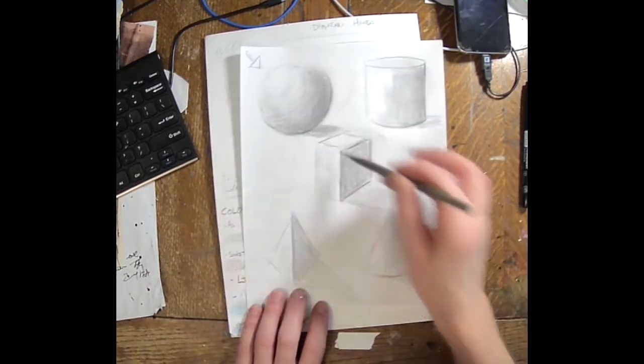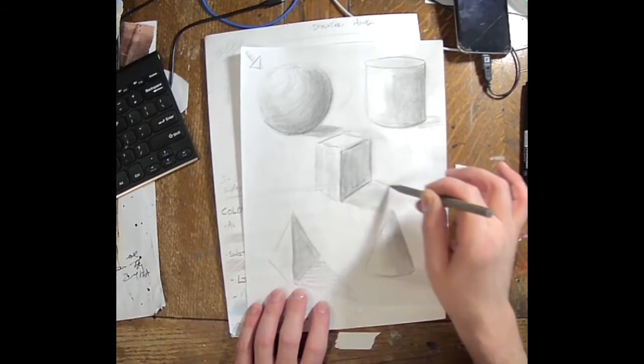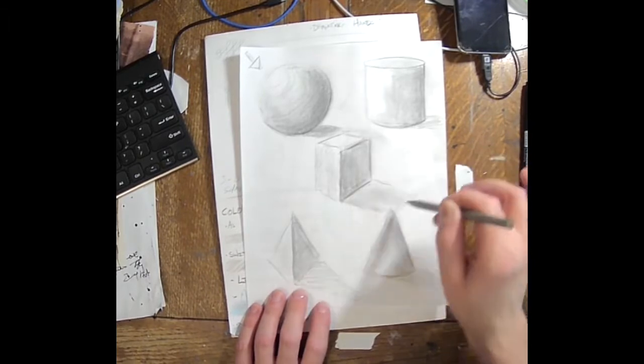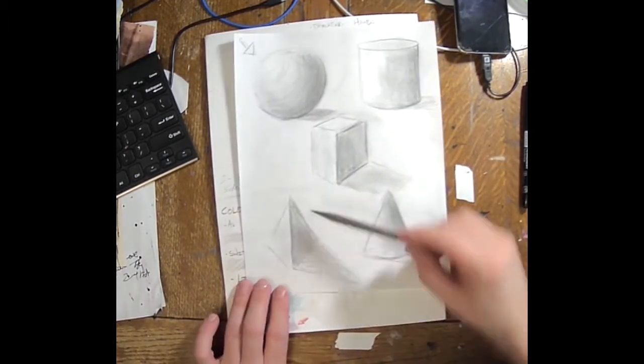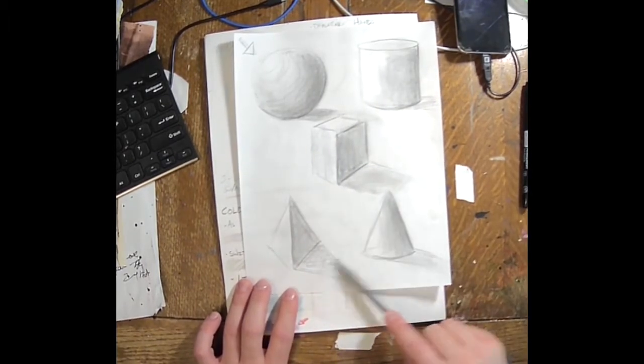But the basic idea is that it's going to come off the edges of your object. So off the cylinder, off the cube from the corners, off the cone, and then off the pyramid. The general idea is you go to those outer edges and you cast your shadow away from it that way.